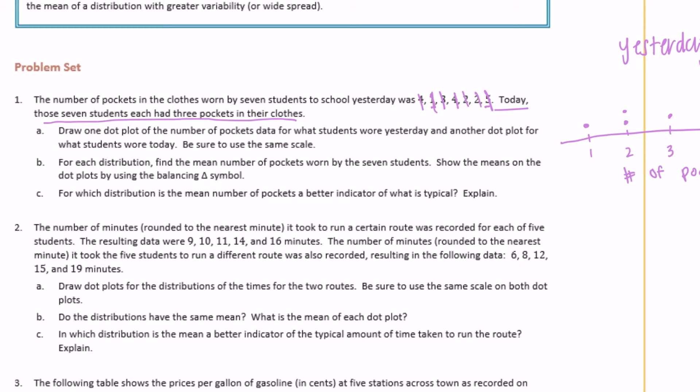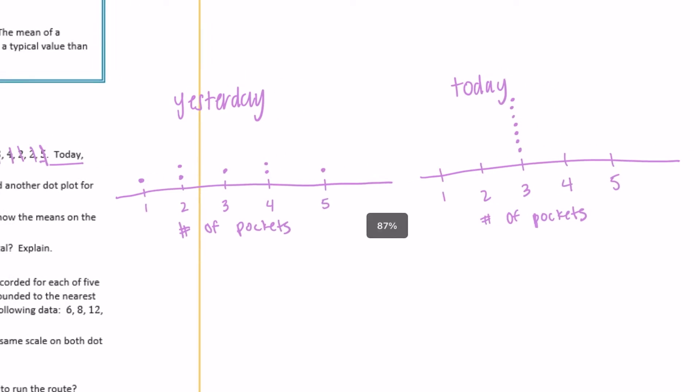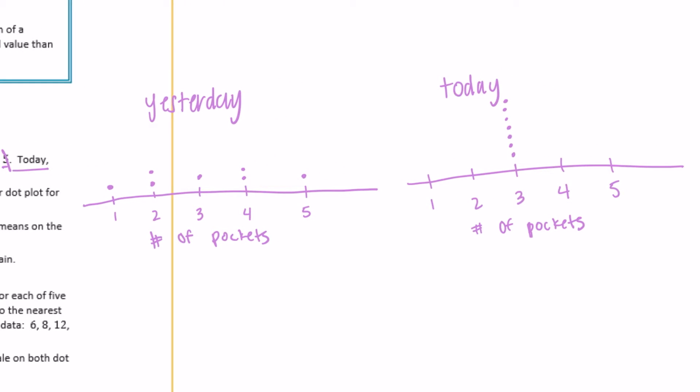For part B, find the mean number of pockets worn by the seven students and show the means on the dot plot using the balancing symbol. For today it's very simple because they're all three, so the mean is going to be three — that's where they are all balanced. The mean is three for today.